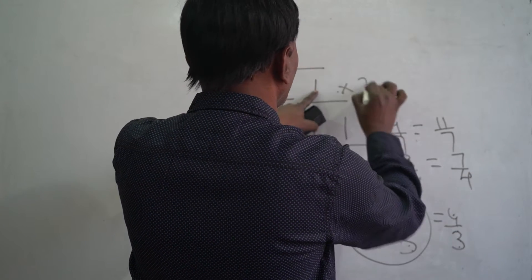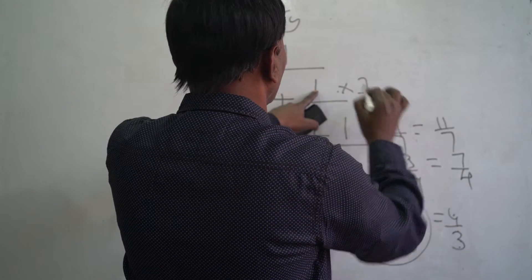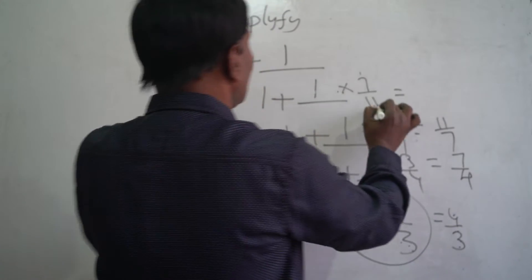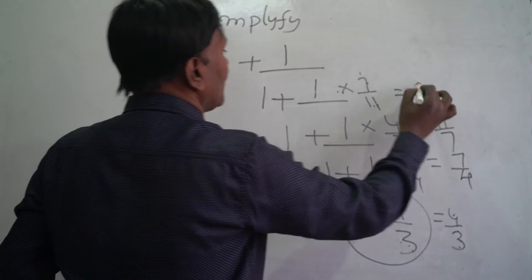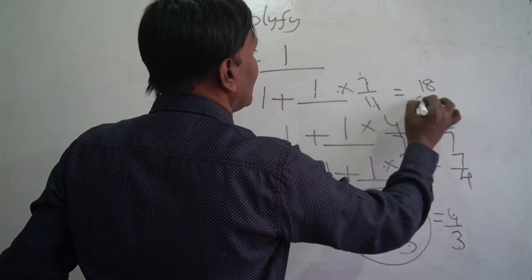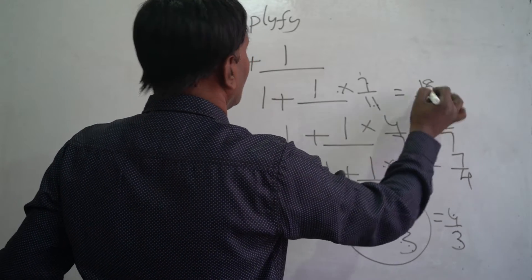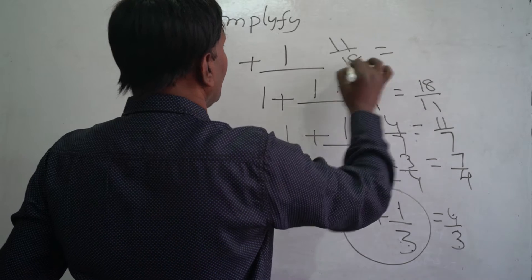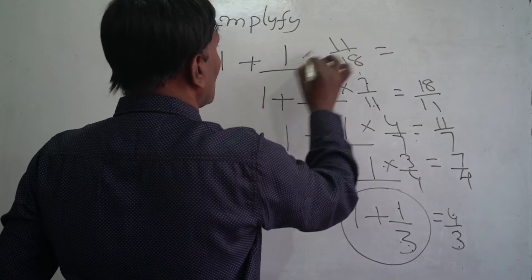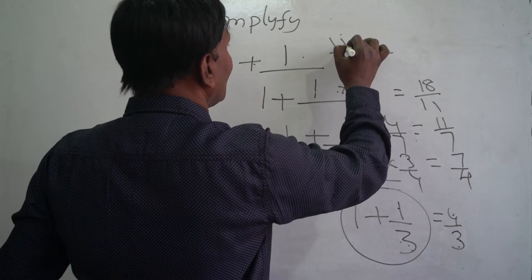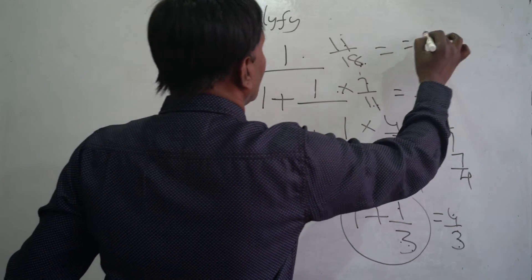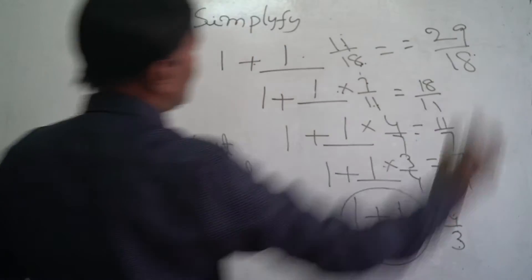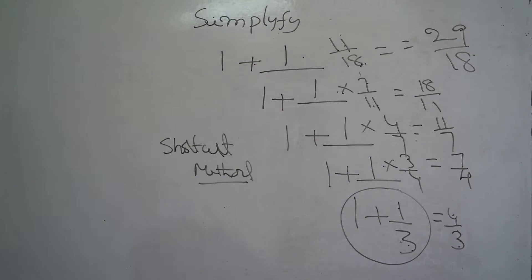If it comes here, it becomes 7 by 11. Then 1 plus 7 by 11: 11 plus 7 is 18 by 11. If it comes here it becomes 11 by 18. Next, 1 plus 11 by 18: 18 plus 11 is 29 by 18. So that is the output.